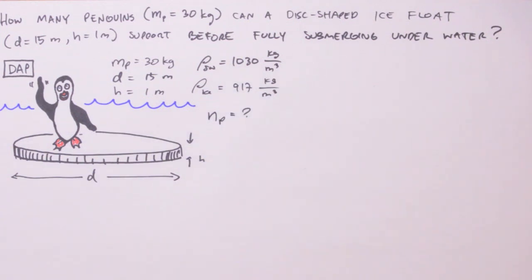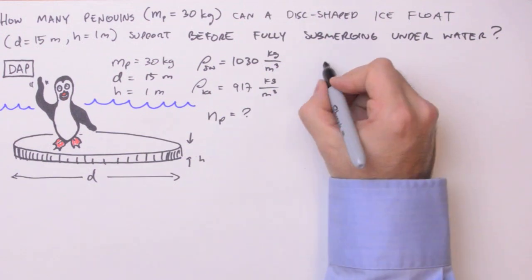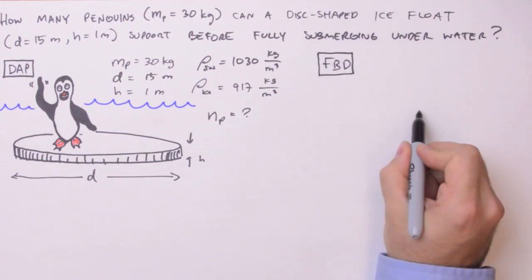Now we need to determine what sort of problem this is. At this point, a typical physics student has encountered only four types of problems: kinematics, Newton's second law, conservation of energy, and conservation of momentum. Since we've neither motion nor collision here, that means this is a Newton's second law problem, which means we need to draw a free body diagram.